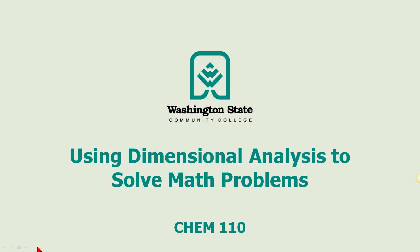This screencast is on using dimensional analysis to solve math problems. Dimensional analysis is a method to solve problems in both math and chemistry, and it's a method to basically convert units. In chemistry, it's a method to convert both units and substances. Dimensional analysis is also referred to as the factor-label method and the unit factor method.